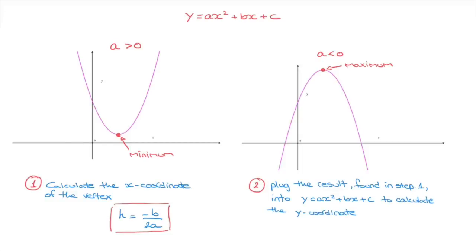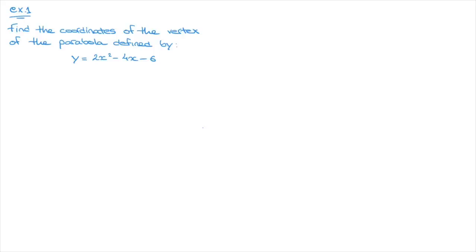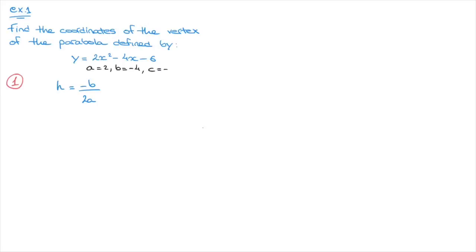Now that we've written down the two-step method, let's see how to do that with a couple of examples. As a first example, we're asked to find the coordinates of the vertex of the parabola defined by y equals 2x squared minus 4x minus 6. To do this we follow our two-step method. Step one: we calculate the x-coordinate of the vertex using h equals negative b over 2a. Looking at the equation, the coefficients are a equals 2, b equals negative 4, and c equals negative 6.